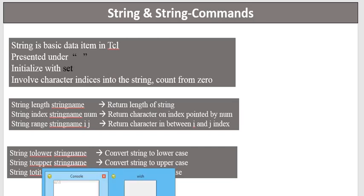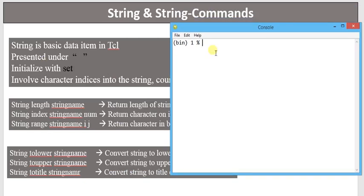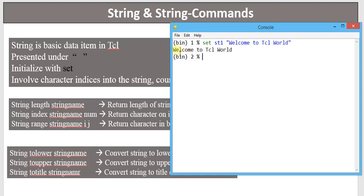String is considered a basic data type in TCL. A string is represented by double quotes. It is basically a group of similar type or category of data — it can be in numeric format or it can be characters. We can use the `set` command to initialize a string, for example: `set st1 "welcome to TCL world"`. This is a string which contains a group of characters enclosed by double quotes.